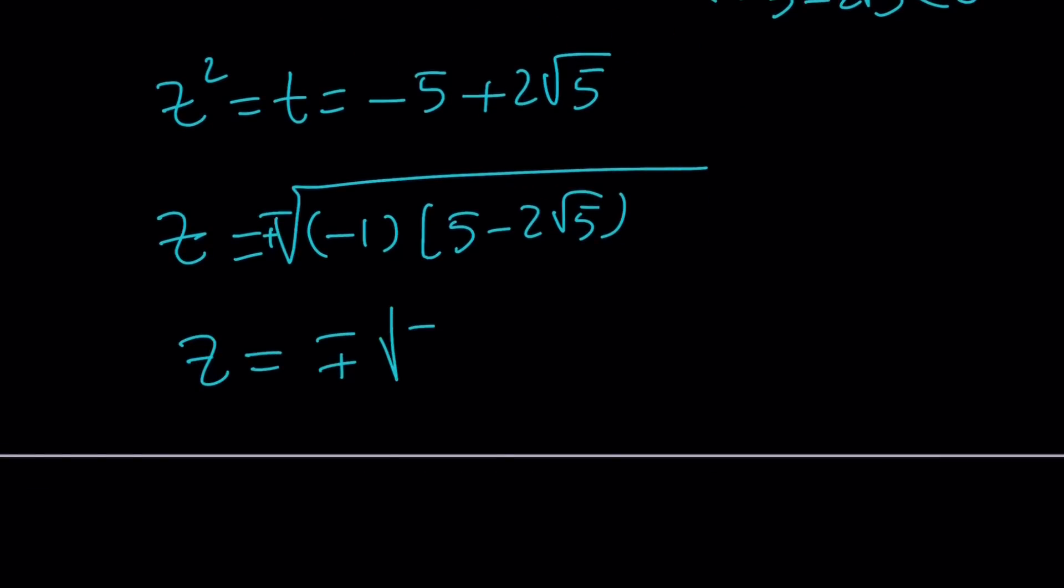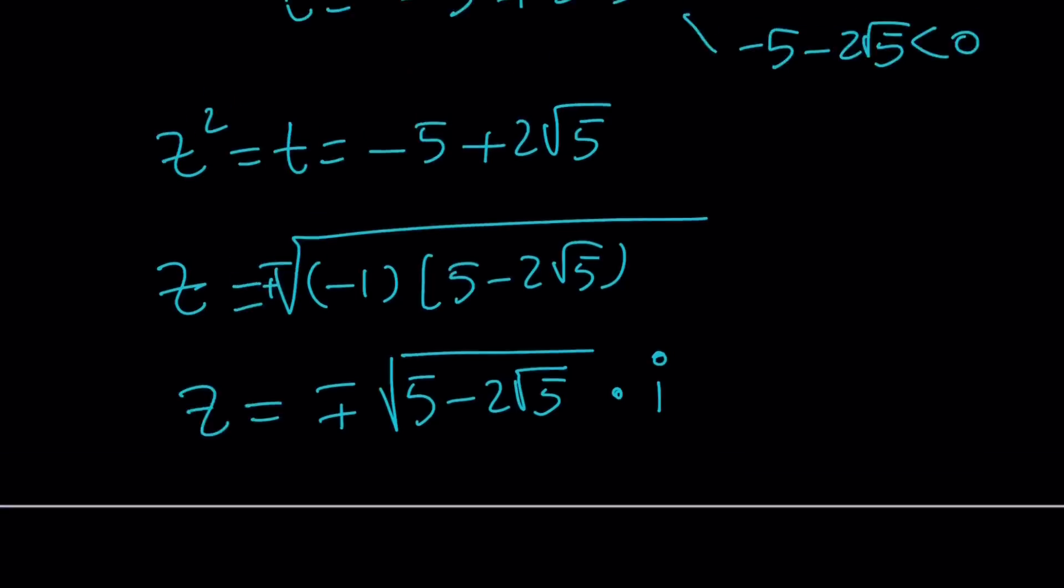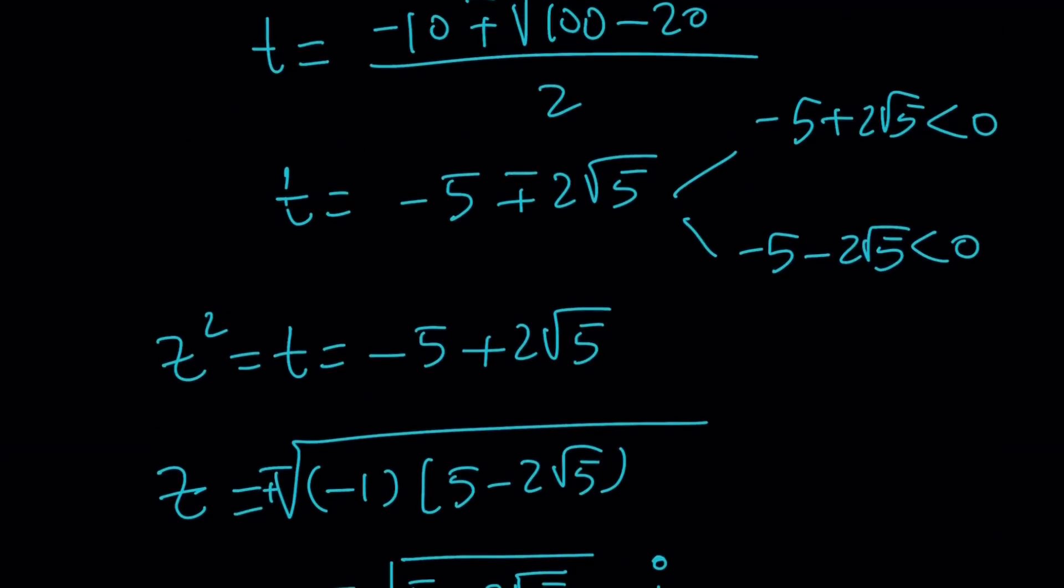And then obviously, the square root of -1 is just going to generate an i. And of course, there's going to be a plus minus sign here as well. And this is going to look like this: √(5 - 2√5) multiplied by i. So that's going to be two of the values. And we can do the same thing for -5 - 2√5. If you take its absolute value, it's going to be 5 + 2√5.